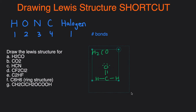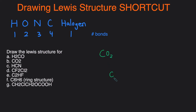Next one, CO2. We know that carbon goes in the middle, and we're going to have the 2 oxygens around the carbon. Each oxygen is going to want a double bond, so double bond here and double bond here. That makes the oxygen happy because they have double bonds, and that also makes the carbon happy because the carbon has 4 bonds and it wants 4 bonds. Then the last thing we have to do is add the lone pairs — 2 lone pairs on each oxygen so it has 8 electrons total around it.